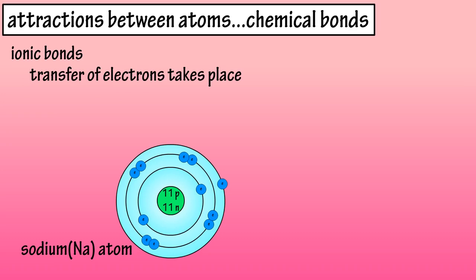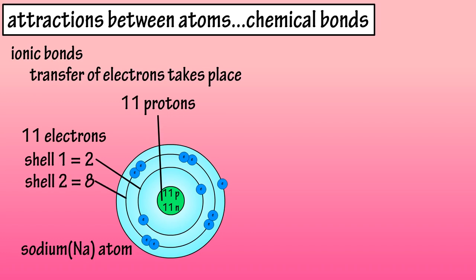Here we have a sodium atom, which has an atomic number of 11, meaning it has 11 protons in its nucleus and 11 electrons in its shells or energy levels. Shell 1 has two electrons, shell 2 has eight electrons, and shell 3 has one electron.